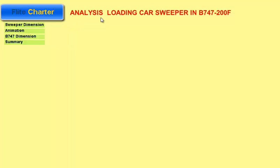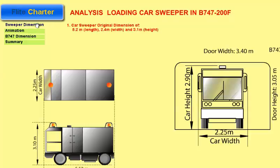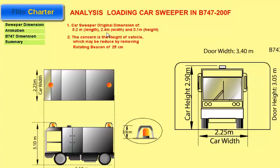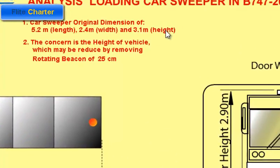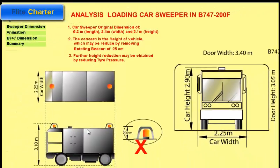Welcome to the analysis of loading car Swiffer in 747 trailers. First we'll have a look at the Swiffer dimensions, with original dimensions of 5.2 meter length without room, 2.4 meter width, and 3.5 meter height.